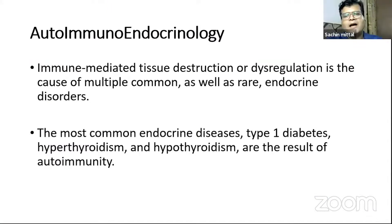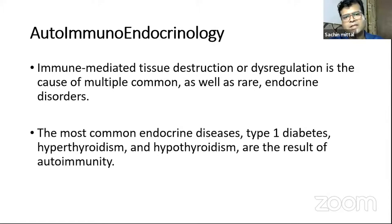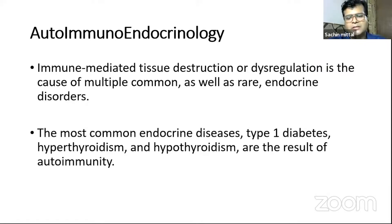If we have immune-mediated destruction or a dysregulation of an endocrine tissue, that can lead to an endocrine disorder, which is among the commonest endocrine disorders. The first thing which will pop into your mind is autoimmune thyroid disease — either hypothyroidism or hyperthyroidism — and probably among the commoner ones would be type 1 diabetes mellitus.